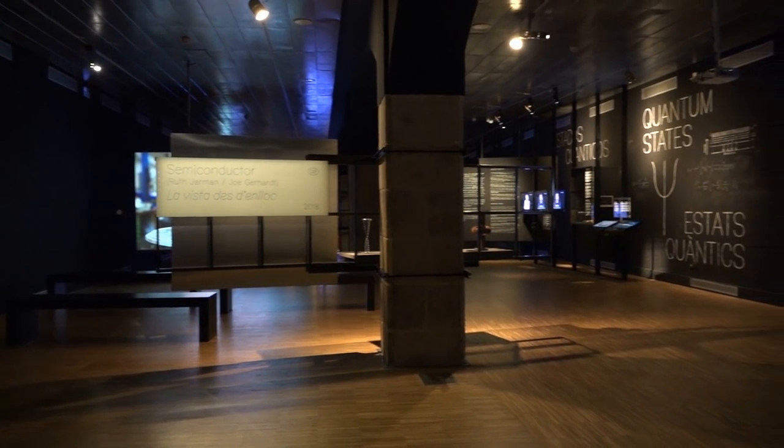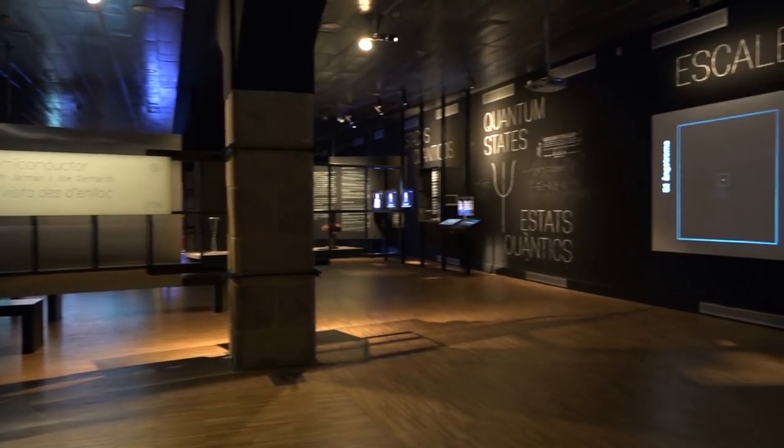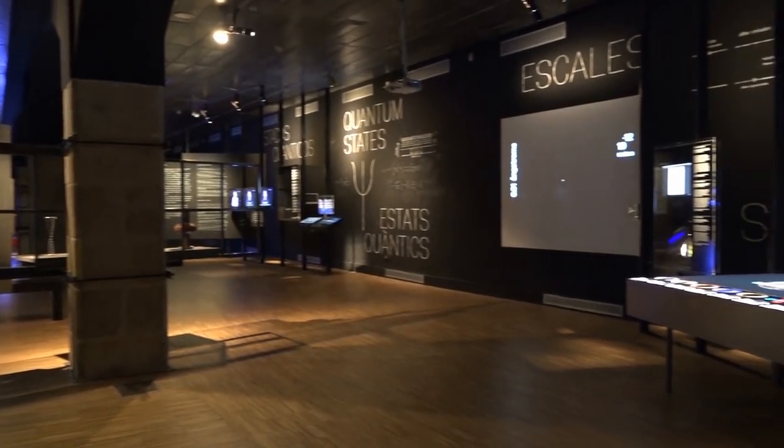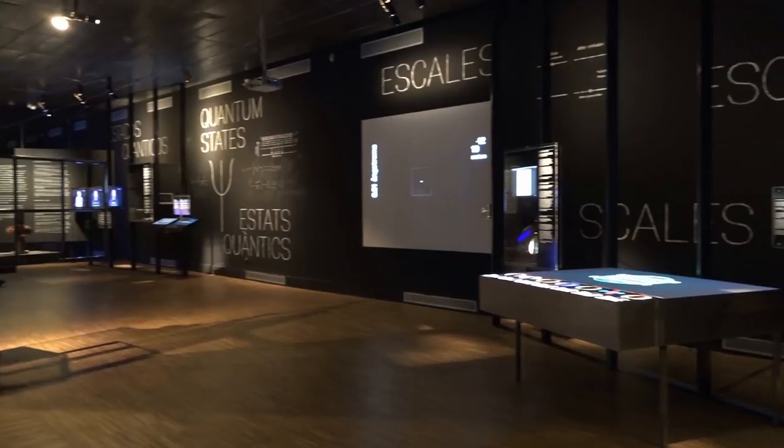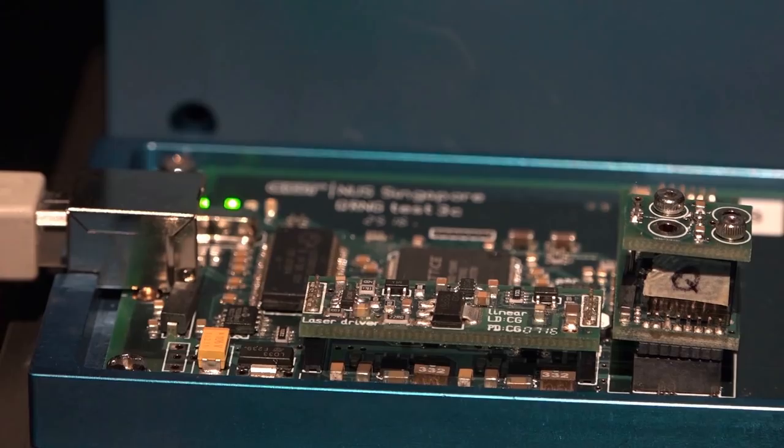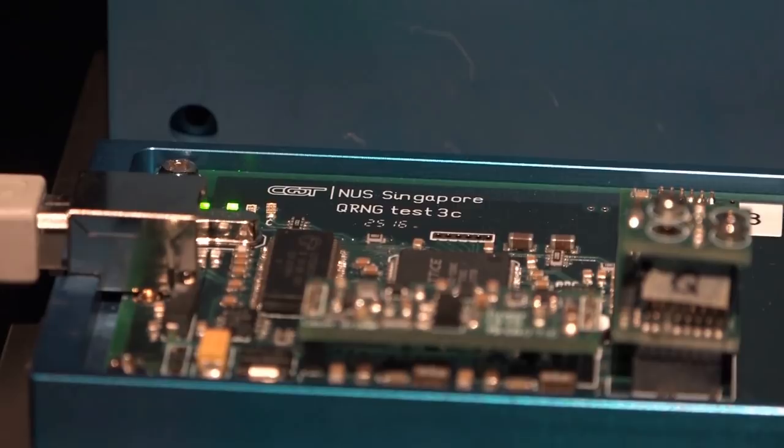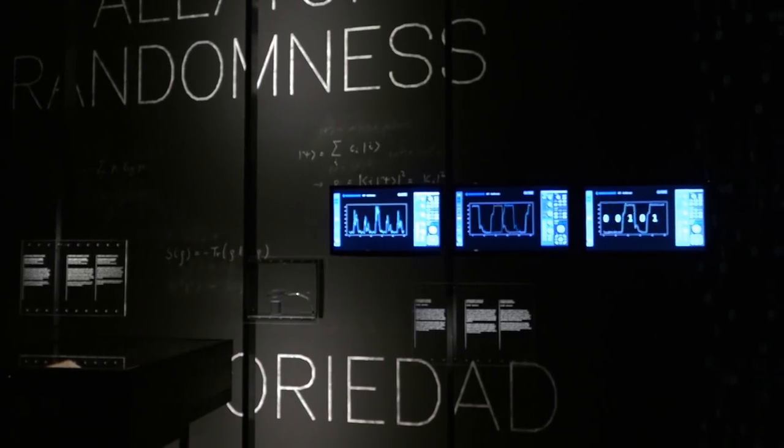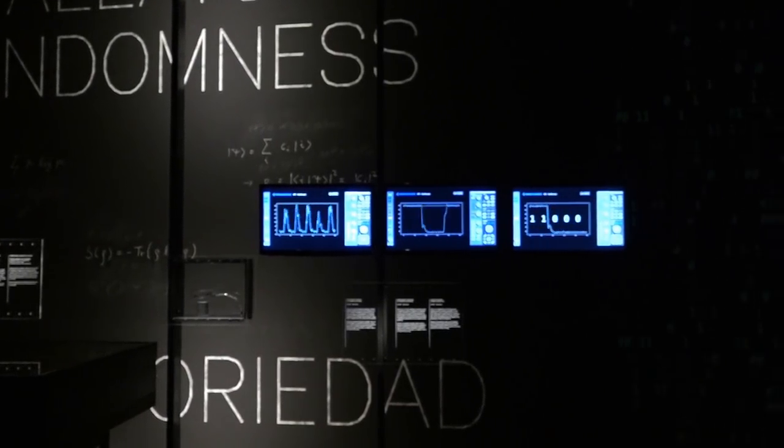Most random generators we use today are not truly random, which is why they are often called pseudorandom generators. The typical pseudorandom generator will take a seed, for example from your computer's clock, and use this to extract a sequence of numbers from, say, the digits of pi.